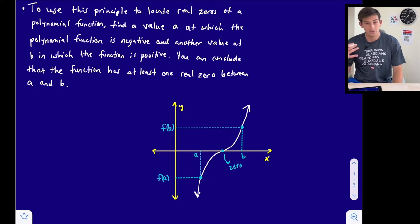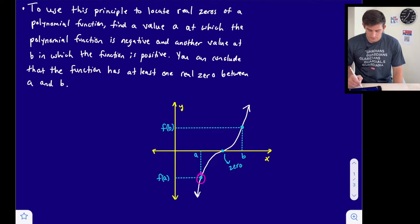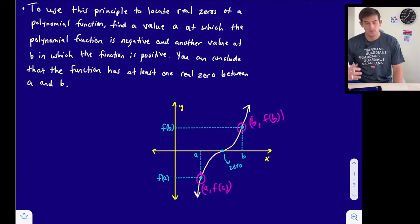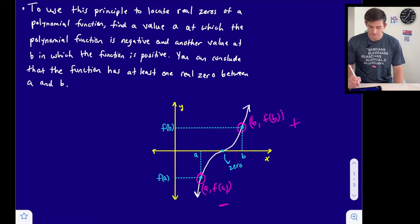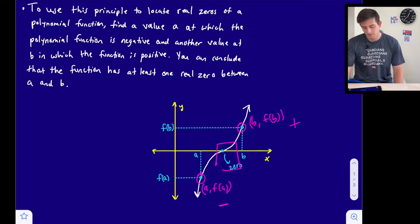Here's a diagram to illustrate this principle. We have a point a comma f of a down here and a point b comma f of b up here. We can see that b's y value is positive and a's y value is negative. That gives us the truth that a y value of zero must lie between a negative and a positive, giving us the ability to say there is a real zero between those two numbers.